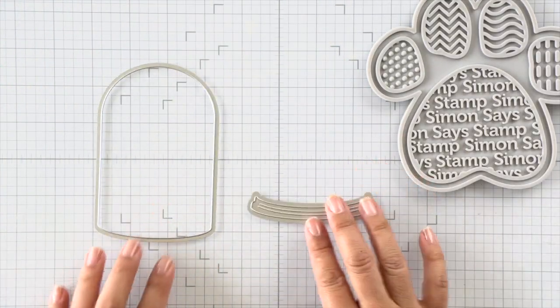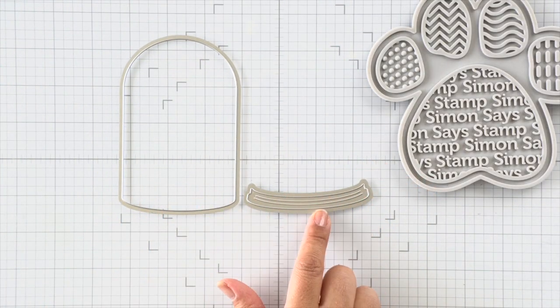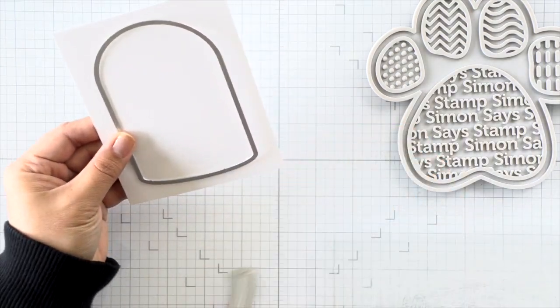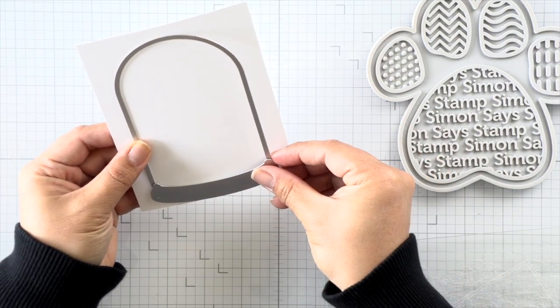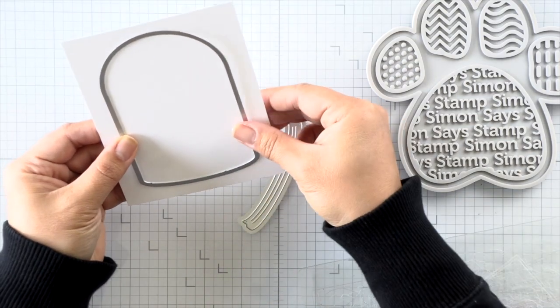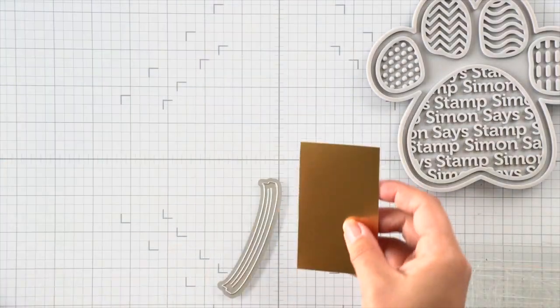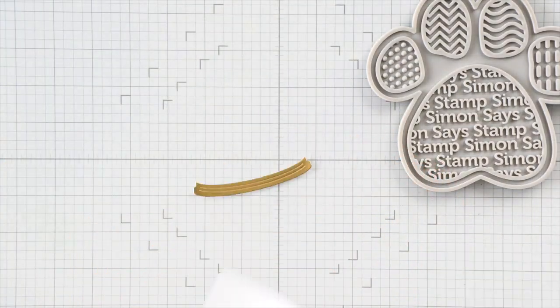I'm not going to pop them out just yet. I'm just going to set them aside and then die cut everything. Here's the terrarium die and I'm die cutting a frame using that dome first. And then for that dome base, I'm going to die cut that out of matte gold cardstock.